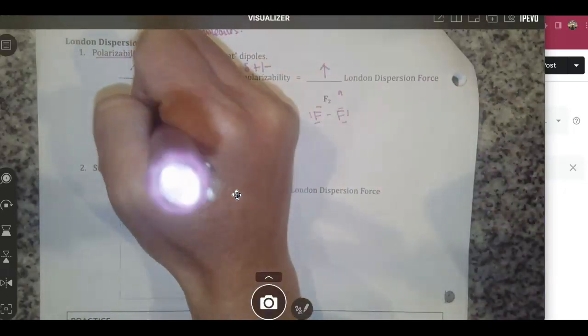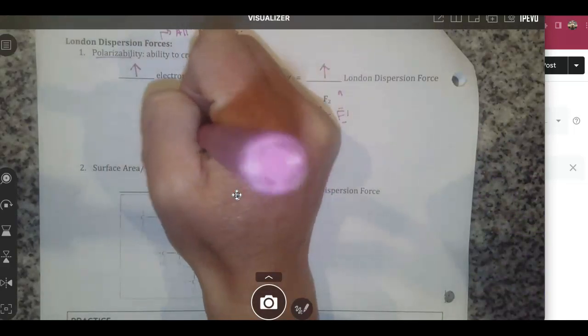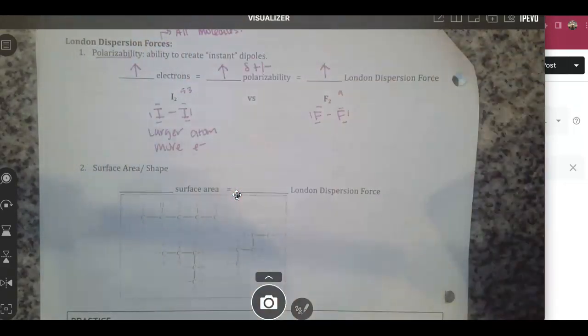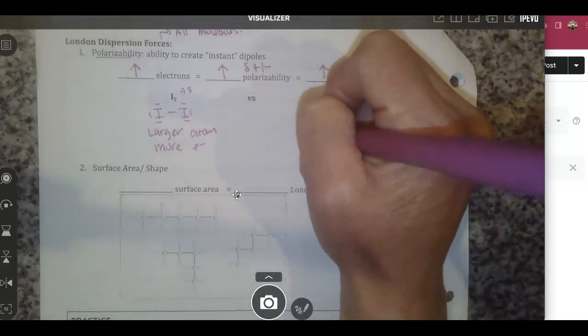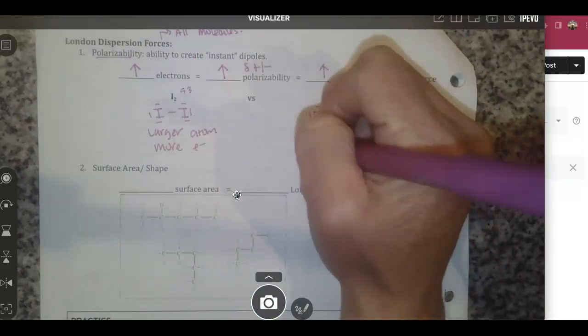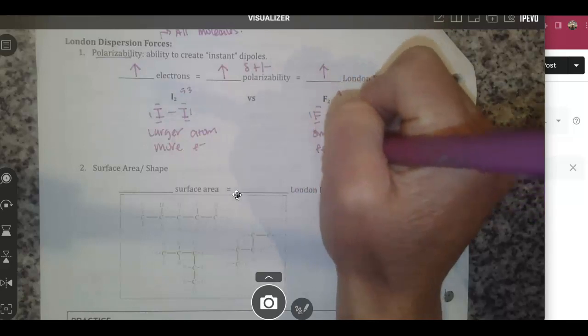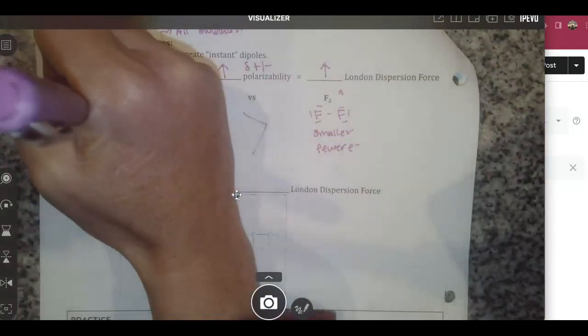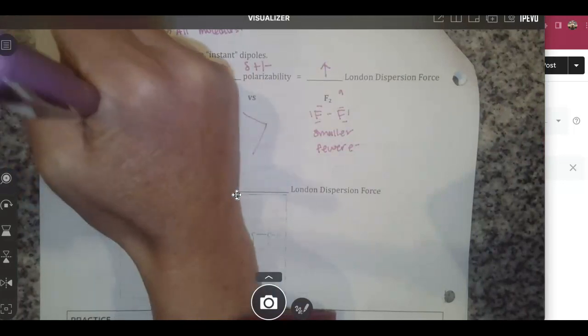So this is a larger atom with more electrons versus a smaller atom with fewer electrons, meaning that iodine is going to have a greater London dispersion force.